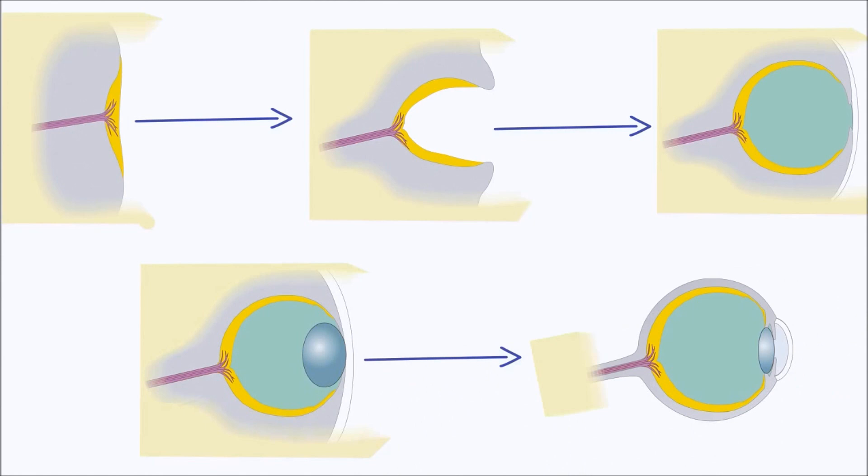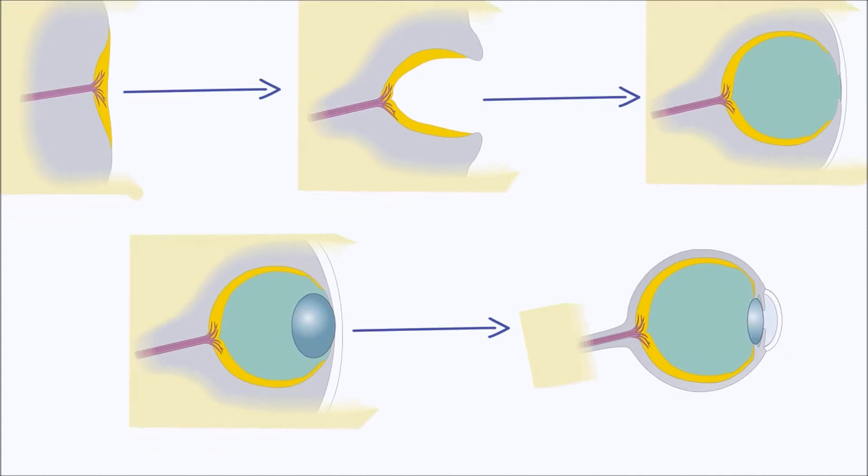It is important to note that every tiny change these researchers made measurably improved image quality. The researchers concluded that these steps could have taken place in about 360,000 generations, or just a few hundred thousand years.